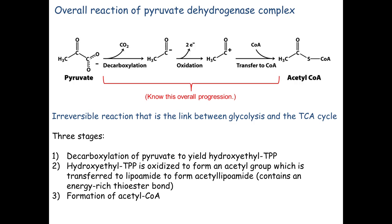So it loses the CO2, we oxidize it to remove a couple of electrons making another NAD into NADH, and then we transfer the remaining two carbons — the acetyl group — onto CoA to make acetyl-CoA. That's the bulk of pyruvate dehydrogenase. Why is it named pyruvate dehydrogenase? Because the main step when we categorize this enzyme is a redox reaction — the second step. Even though it does other things, it is a redox reaction, so we name it a dehydrogenase.